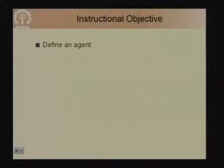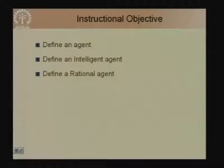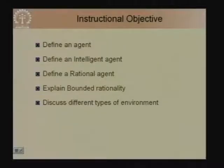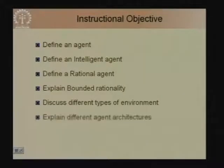The instructional objectives of today's lecture are to define an intelligent agent and what we mean by intelligence as an agent, to define a rational agent — which we touched on in the last class — and to explain the concept of rationality and bounded rationality. We will also discuss the different characteristics of the environment in which the agent operates and explain different agent architectures.